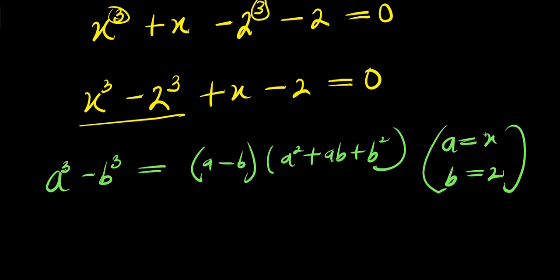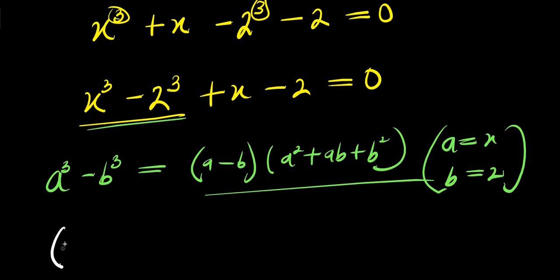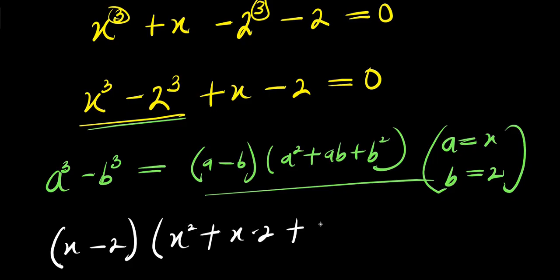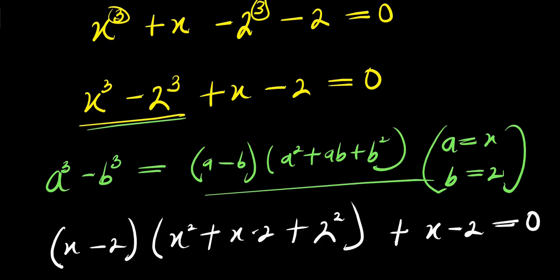So right now, this is what we are going to apply here. We apply the factoring identity here. That means we have x minus 2 times x squared plus x times 2 plus 2 squared, then we have plus x minus 2 equals 0.